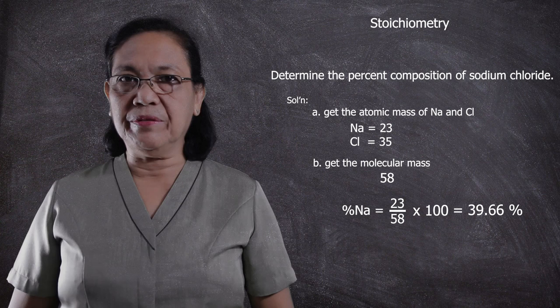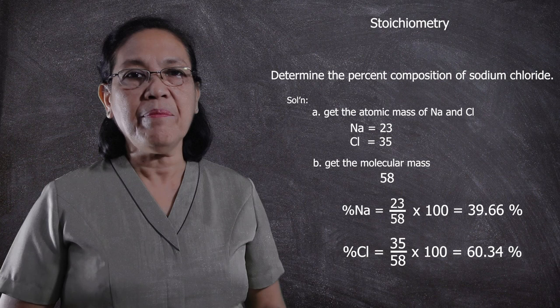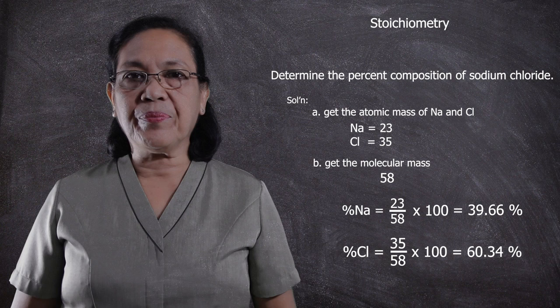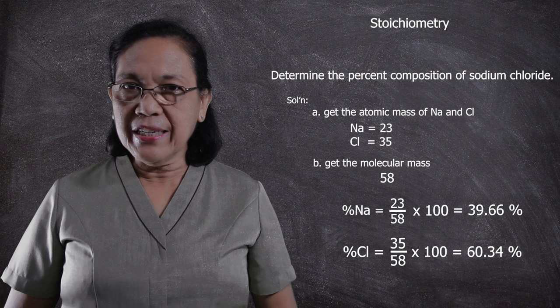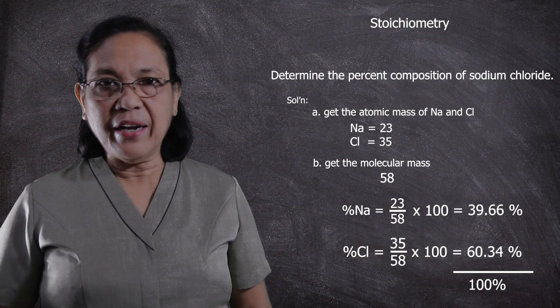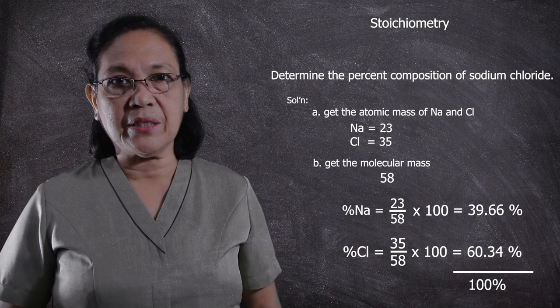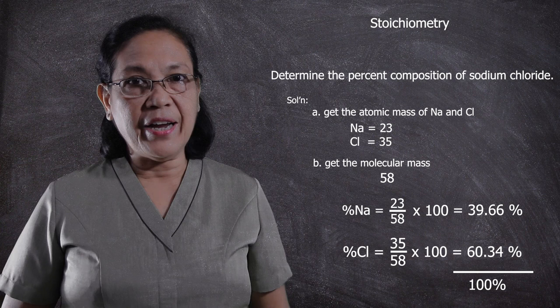Then multiply it by 100, so we have the answer 39.66%. Getting the percent composition of chlorine in sodium chloride, you have to divide 35 by 58, then multiply it by 100, so we get an answer of 60.34%. If you are going to get the total percent composition between chlorine and sodium, there is a total of 100%. The 100% implies that sodium chloride is a pure substance, and secondly, the 100% implies that your answer is correct.